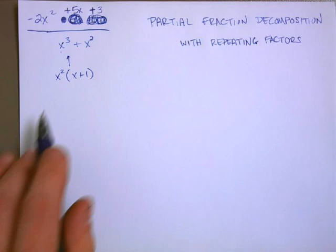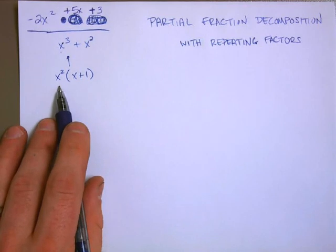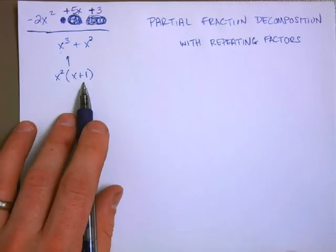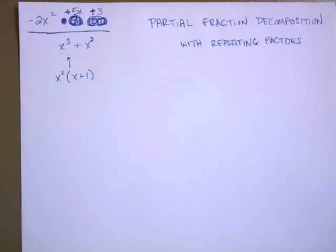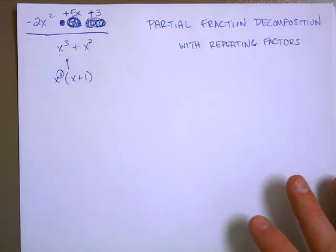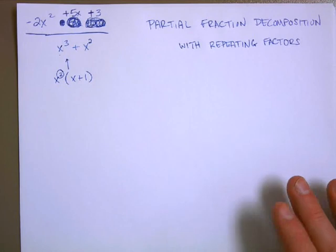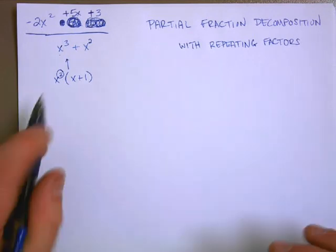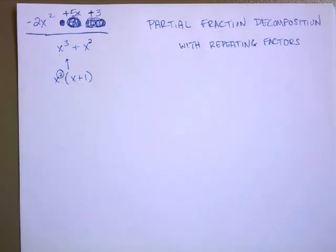Now, normally you would say, hey, I've got two chunks of stuff here. I've got an x squared chunk and I've got an x plus 1 chunk, so you're going to need two fractions. But the thing is, any time you have a square, an exponent in the denominator, we have to represent every power of that term leading up to the power that's represented here.